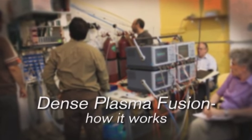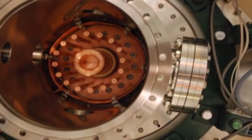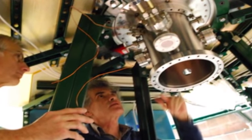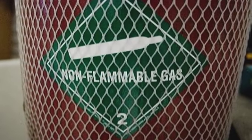At the heart of the dense plasma focus are two cylindrical electrodes only a few inches across nested inside each other. The electrodes are enclosed in a vacuum chamber with a low-pressure gas filling the space between them.